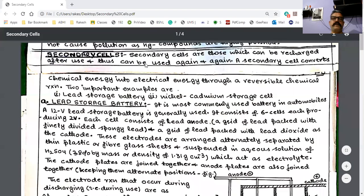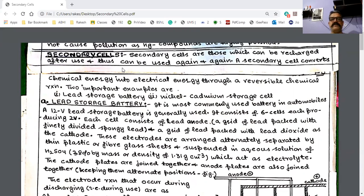Dear students, let us study secondary cells. In the previous video, I had told you that primary cells are those which can be used only once. We can use them once, then we can't recharge them, then we can't use them. That is, they become dead after their use.